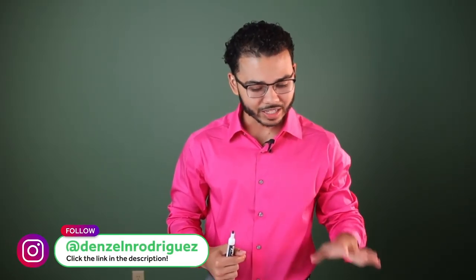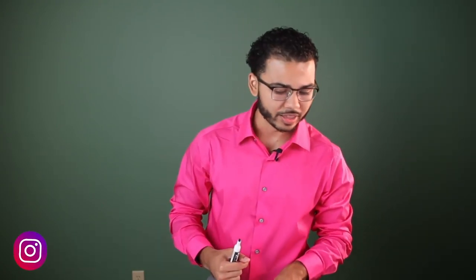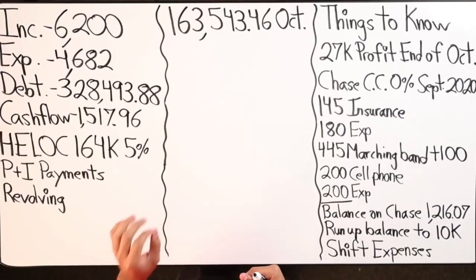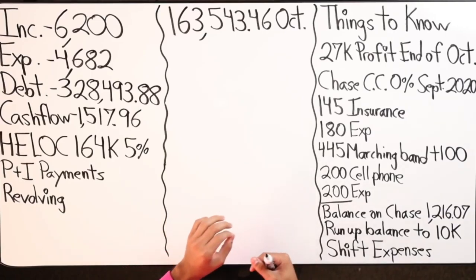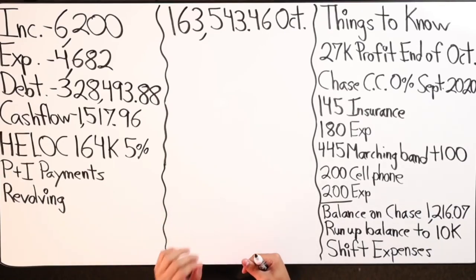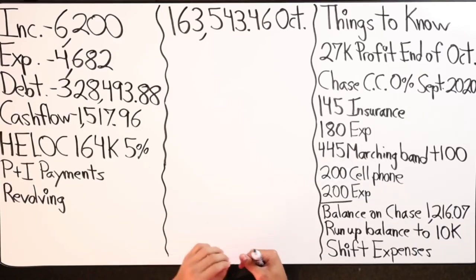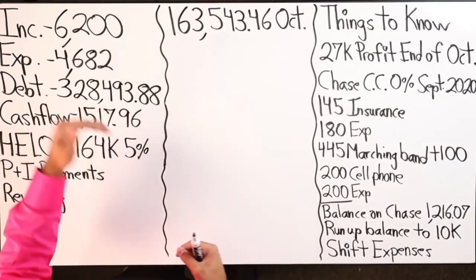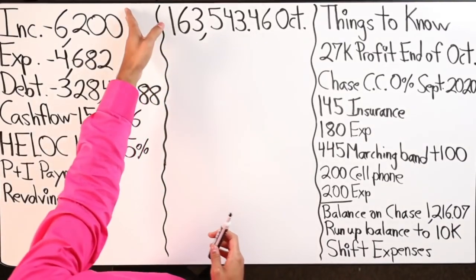In this velocity banking scenario, I have a client on the board — a gentleman with a home equity line of credit in the first position. The primary goal is to pay off as much debt as possible by leveraging this debt tool. Overall, he has over $300,000 of debt.